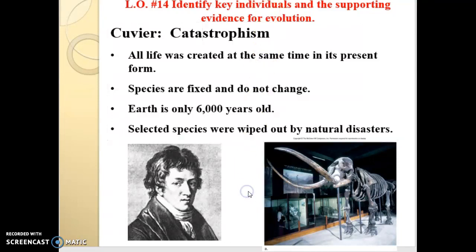Catastrophism held that everything was created on Earth at the same time — dinosaurs, fish, birds, humans, primates, bacteria, plants, fungi, everything. 1.8 million species on Earth, all at the same time. And species are fixed and do not change over time. He also backed the idea that the Earth is only 6,000 years old — you can't change a species in 6,000 years; there's not enough time for generations. How can elephants go through enough generations to change if the Earth's only been around for 6,000 years?